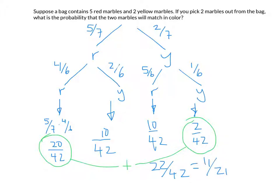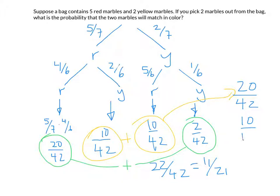So the probability of getting two matching marbles is 11 over 21, which is very close to 50% but not exactly. If you were playing a game, it would slightly favor the person hoping for matching marbles. The two non-matching paths — 10/42 and 10/42 — add to 20/42, or 10/21, and together 11/21 and 10/21 account for 100% of what can happen.